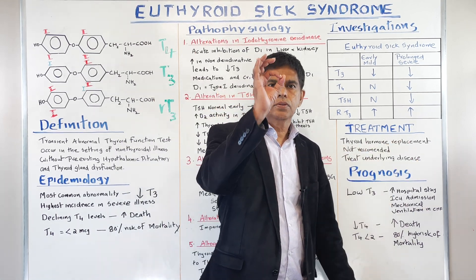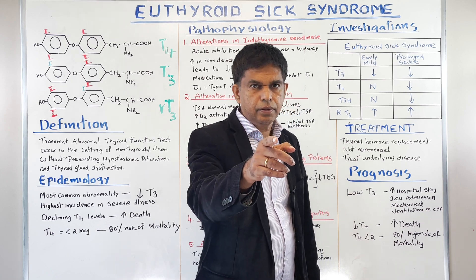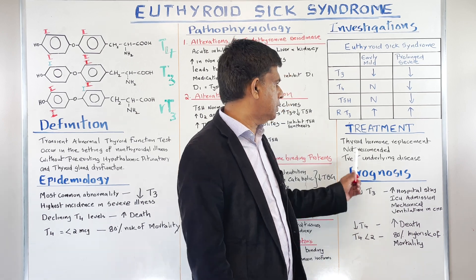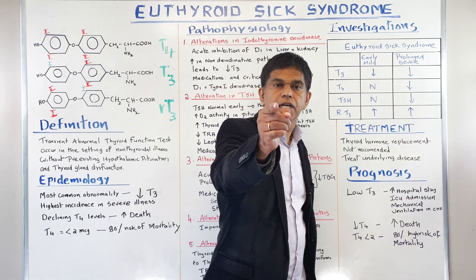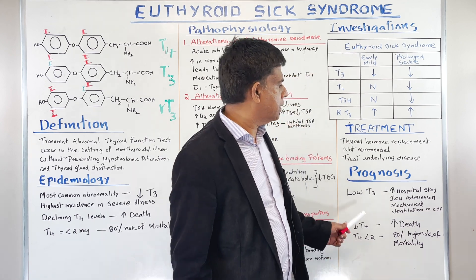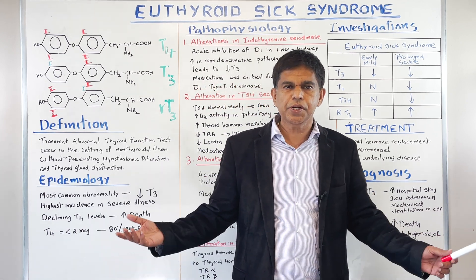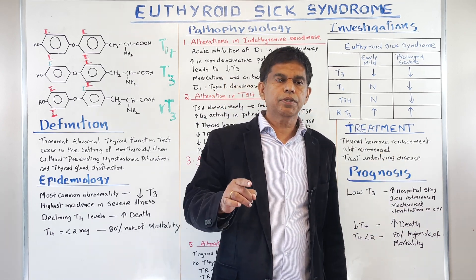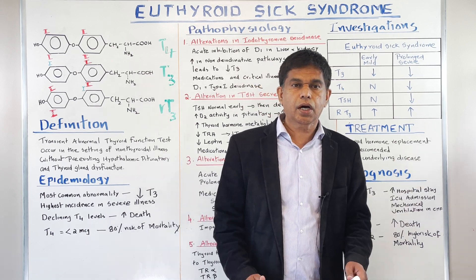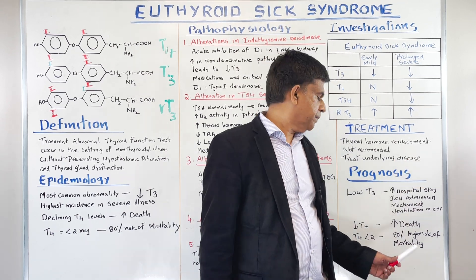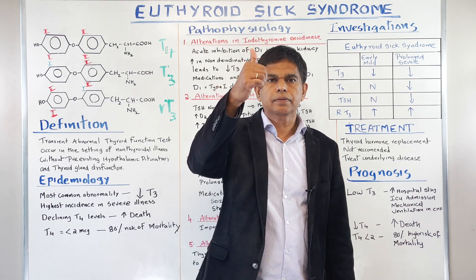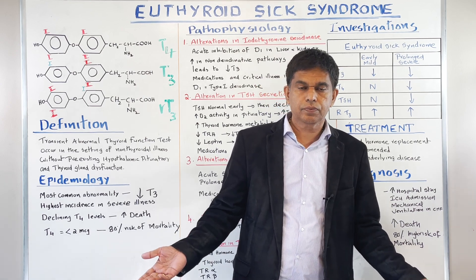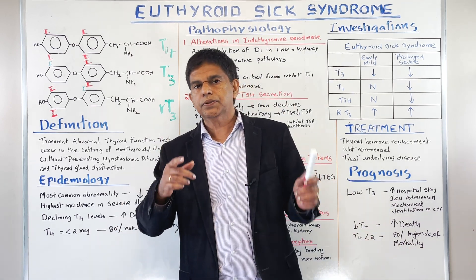What is the treatment? No treatment. There is no benefit in supplying thyroid hormone — don't give any thyroid replacement. What do you do? Treat the underlying disease. Regarding prognosis: low T3 means increased hospital stay, ICU admission, and higher chances of mechanical ventilation. Decreased T4 means increased mortality. If T4 is less than 2, there is an 80% chance of death — very important.